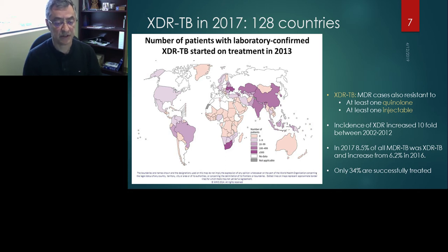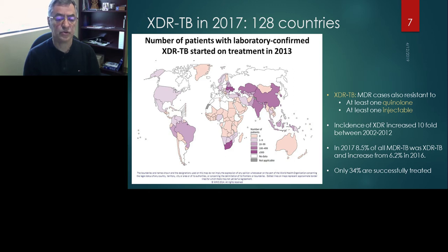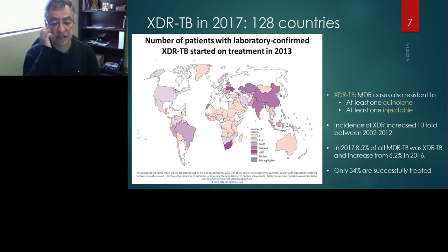This goes in the face of early assumptions that the more resistant the bacteria becomes, the less fit it becomes, because mutations that cause resistance also carry a fitness cost. Initially there was thinking that more resistant bacteria wouldn't spread — but the map says otherwise. Unfortunately, the treatment success rate for XDR-TB is even worse, at 34%.